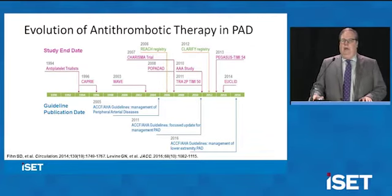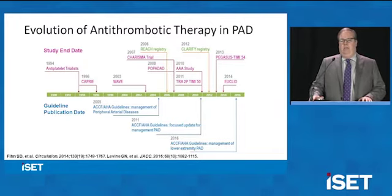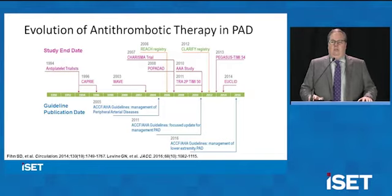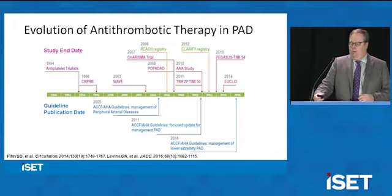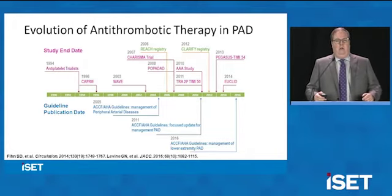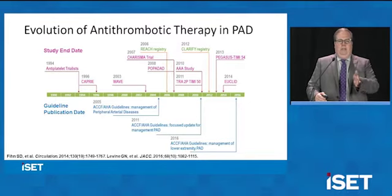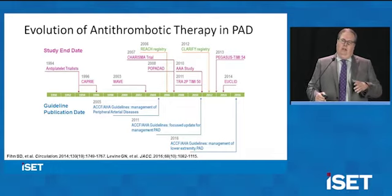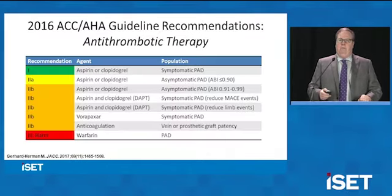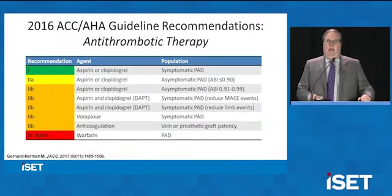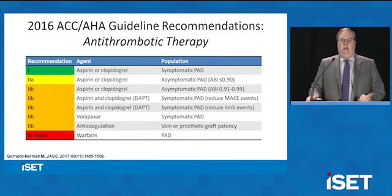We can see how things developed over time. The different studies I mentioned line up against when guidelines were first written in 2005, updated in 2011, and the most recent ones from 2016 — which came before the publication of COMPASS. So the guideline recommendations reflect where we were a couple of years ago, which is normal in the process. Guidelines are supposed to make sure we're doing exactly the right things, not to be the most up-to-date documents taking a look at the newest data.